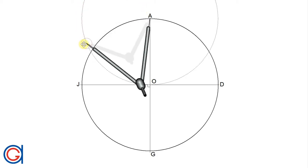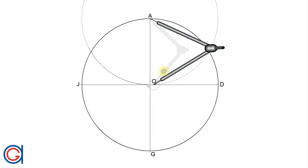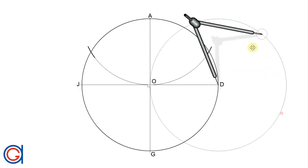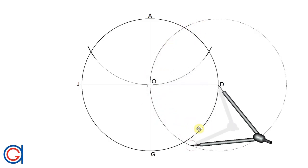So setting our compass on the point A we scribe a semicircle which cuts the circle at two points as can be seen here. And now setting the compass on point D we scribe another semicircle which cuts the circumference of the circle at two points.